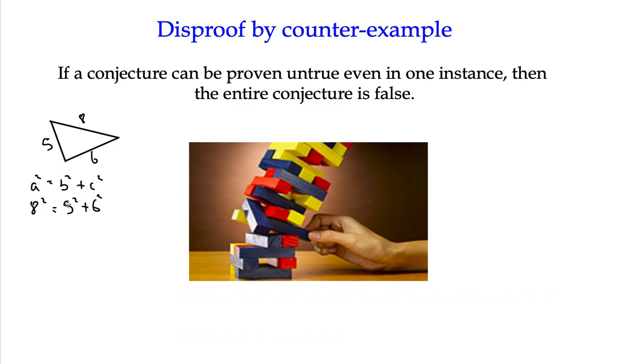In other words, that 8, 5 and 6, these numbers would prove that conjecture to be false. But we know that conjecture works for a limited condition, and that is if the triangle is right-angled.